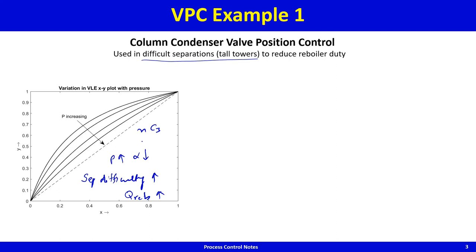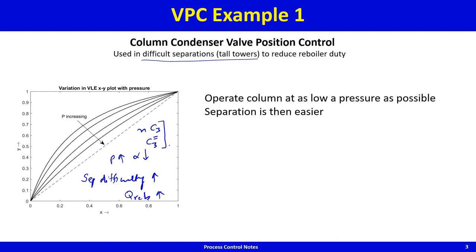A common example is the C3 splitter that separates propane and propylene — a low relative volatility separation requiring perhaps 200 trays. In these tall towers it is beneficial to run at as low a pressure as possible, because the lower the pressure, the greater the relative volatility, the easier the separation, and the lower the reboiler or refrigeration duty.